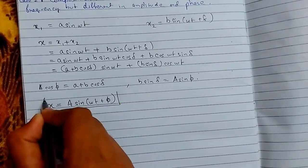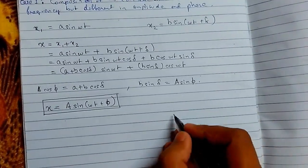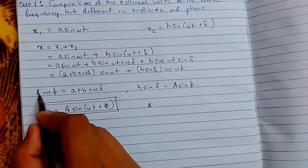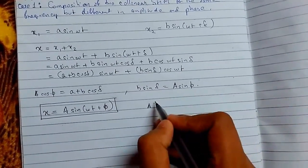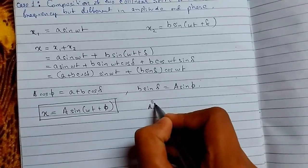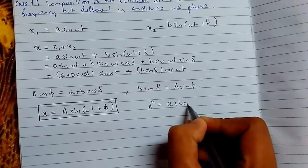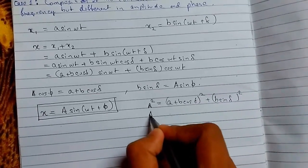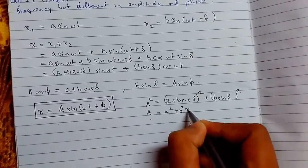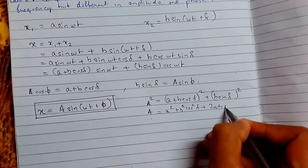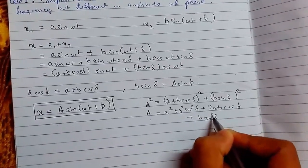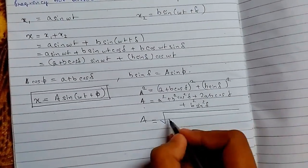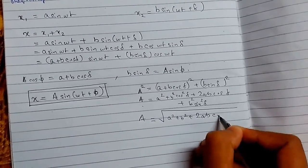Now we find the value of A. Squaring both assumed equations and adding them, using cos²φ + sin²φ = 1, we get A² equals (a + b cos δ)² + (b sin δ)². Simplifying: A² equals a² + b² cos²δ + 2ab cos δ + b² sin²δ. Therefore, A equals root of (a² + b² + 2ab cos δ).